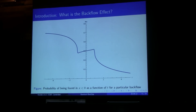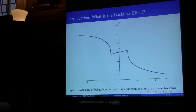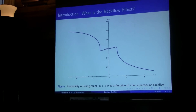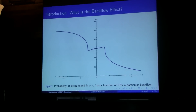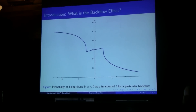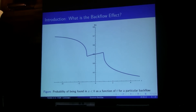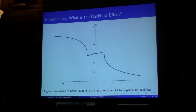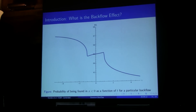Here's a pretty picture. This is a particular state that displays backflow effects. What I'm plotting here is the probability of being found in x less than zero as a function of time. You can see globally it decreases — from negative times to positive times, the trend is for it to go down. But during this intermediate period from t equals minus one to one on that graph, the probability increases. So this is a great example of this.